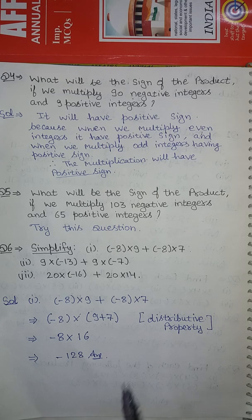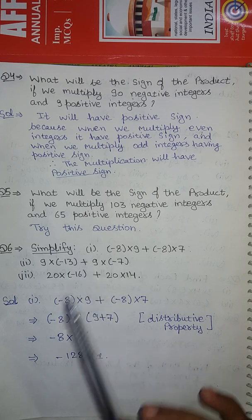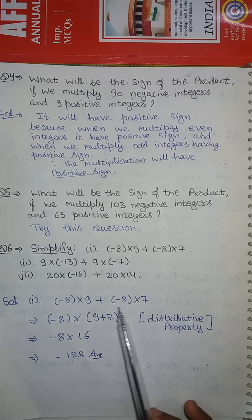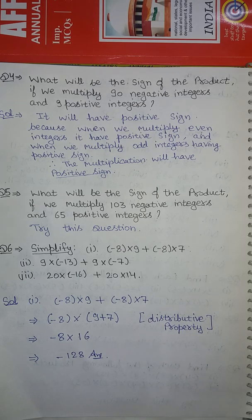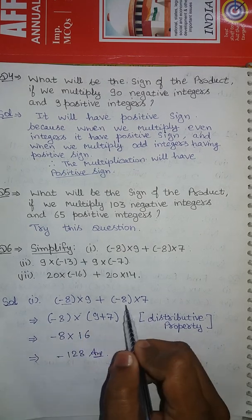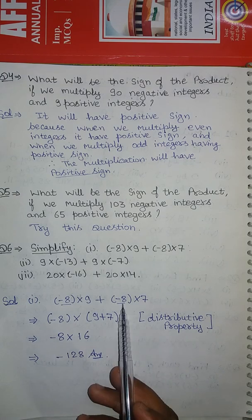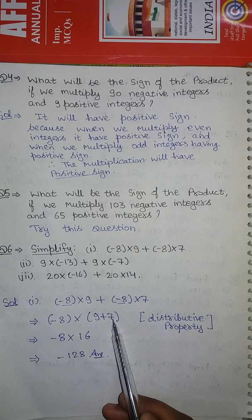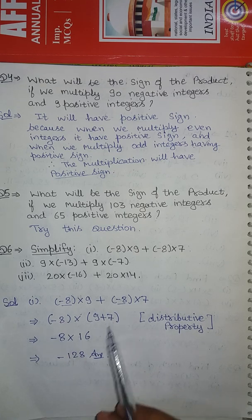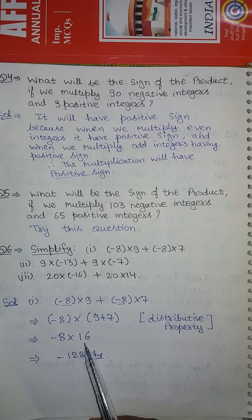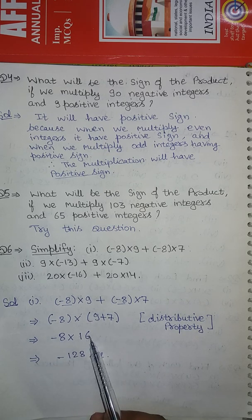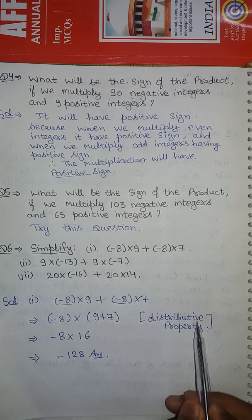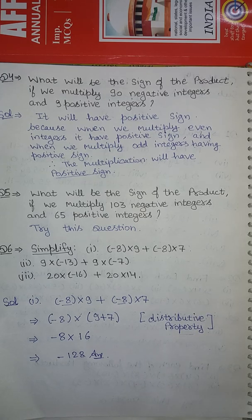Question number 6: Simplify. The first part is minus 8 into 9 plus minus 8 into 7. We can see that minus 8 is common in both terms, so we take minus 8 as common, leaving 9 plus 7. So it becomes minus 8 into 16, which is minus 128. This property is known as the distributive property.